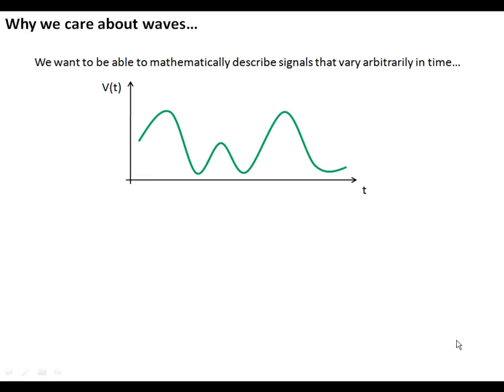Because generally what we want to be able to do in electrical engineering, particularly when we're dealing with analog circuits, is we want to be able to mathematically describe signals that vary arbitrarily in time, not like waves. For example, here's a signal that varies arbitrarily in time right here.